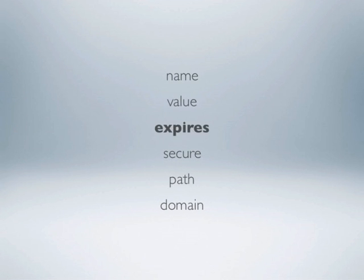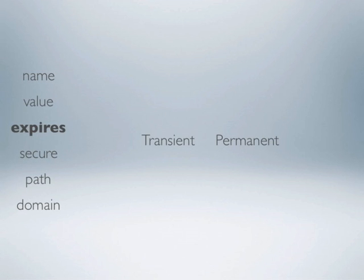The third attribute of cookies that you'll probably use fairly frequently is the expires attribute. The expires attribute has to do with how long a cookie actually sticks around. There are basically two different types of cookies: transient cookies and permanent cookies. Transient cookies are created anytime you create a cookie and do not set an expires date for it. The behavior you'll see from transient cookies is that they will be created but then automatically erased the next time the browser is closed. So a transient cookie will generally stick around as long as the browser remains open, but as soon as the browser closes, that cookie will automatically be erased.